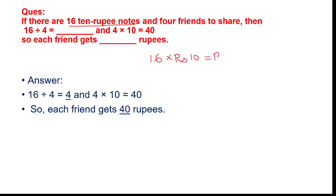Now you have to divide rupees one hundred sixty equally among four friends. So you do one hundred sixty divided by four. One hundred sixty divided by four equals rupees forty. It means each friend will get rupees forty. In this way you have to complete these questions.